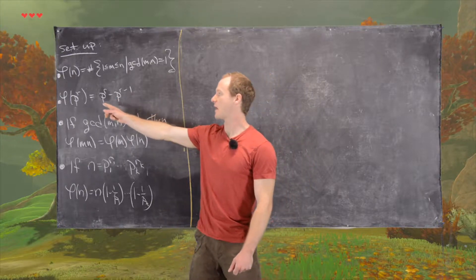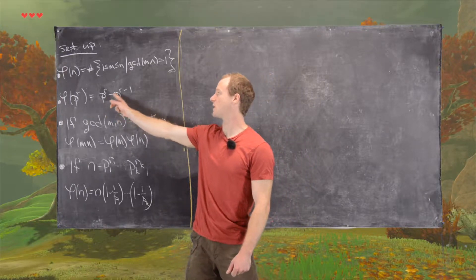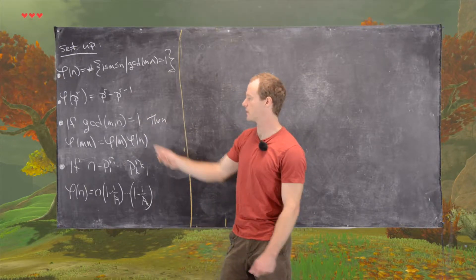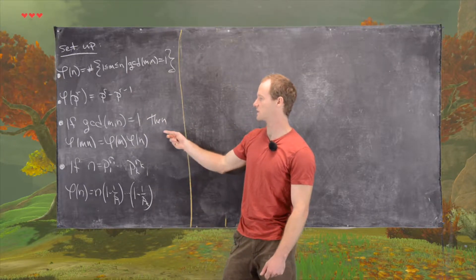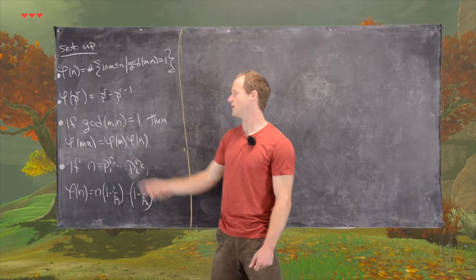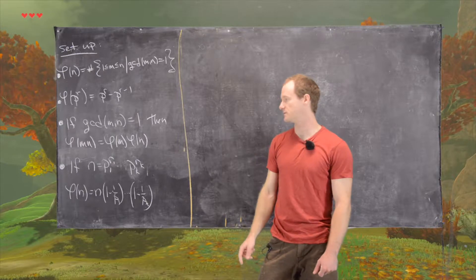We know that phi of a power of a prime is equal to p to the r minus p to the r minus 1. We know that if we have two relatively prime numbers, Euler's phi function acts multiplicatively. So if the GCD is 1, then phi of mn equals phi of m times phi of n.